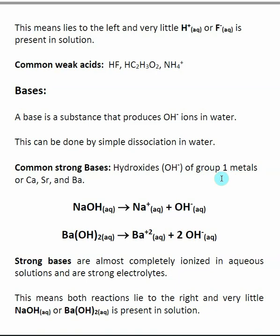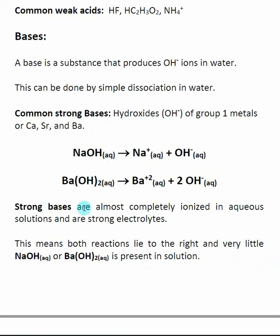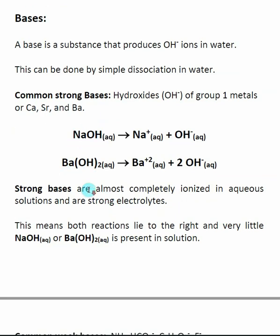Group 1 is the column all the way to the left in the periodic table. Almost exclusively when we use strong bases in this form, it's going to be sodium hydroxide or potassium hydroxide, though there are a few others. Just like strong acids, strong bases dissociate completely when put into solution, and because of that they are strong electrolytes. If I take sodium hydroxide or barium hydroxide and put it into water, almost all of it will dissociate and form the ions — Na⁺ and OH⁻. Very little sodium hydroxide would remain; it would virtually all dissociate to make the ions in solution.